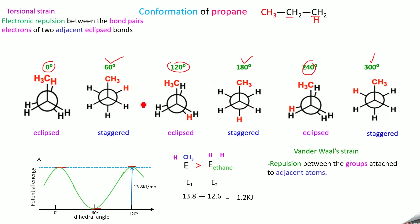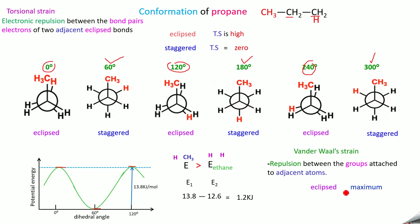In the eclipsed form, the torsional strain is very high because the groups are very close to each other. But in the staggered form, the torsional strain equals zero — so at 60°, 180°, and 300° the torsional strain equals zero. Similarly for Van der Waals strain: in the eclipsed form it is maximum because the Van der Waals radii intersect, while in the staggered form it is minimum. In between these two forms there is the gauche form, where the Van der Waals strain is intermediate. This concludes the conformation of propane.